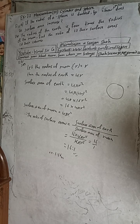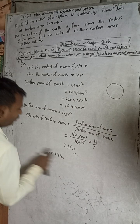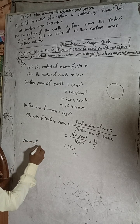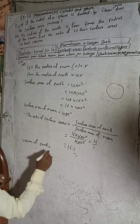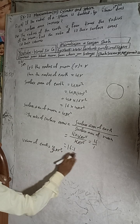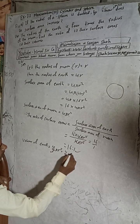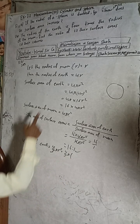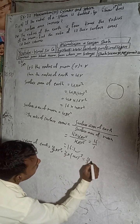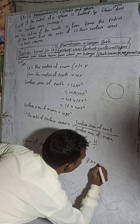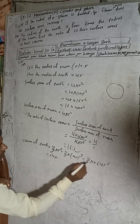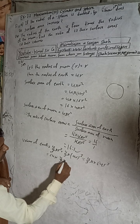One part is still remaining — the volume. Volume of Earth: the formula is (4/3)πr³. The radius of the Earth is 4R, so the volume of Earth equals (4/3)π(4R)³, which can be written as 64 × (4/3)πr³.